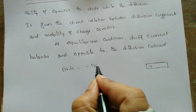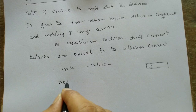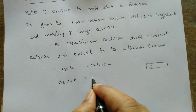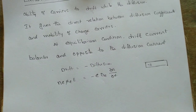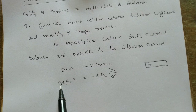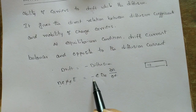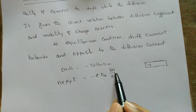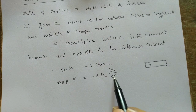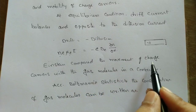At equilibrium, drift equals minus diffusion. According to this: n·e·mu_e·E = −e·D·(∂n/∂x). Here, n is the number of electrons per unit volume, e is the charge, mu_e is the mobility of charge, and E is the electric field. The minus sign indicates direction. D is the diffusion constant, ∂n is the number of electrons, and ∂n/∂x is the rate of change with respect to position.